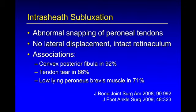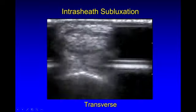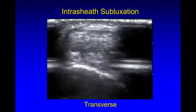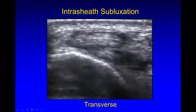This must be differentiated from intrasheath subluxation, where the peroneal tendons may snap on themselves but are not actually displaced because the retinacula is intact. This is a very common occurrence when you have a posterior convex fibula. Normally the fibula should be somewhat concave, keeping these tendons in their location. But with a posterior convex appearance, the tendons are pushed lateral and anterior, and with movement of the ankle we see abrupt snapping of the tendons upon each other. Note the thin retinacula is normal here as it's attached to the fibula.